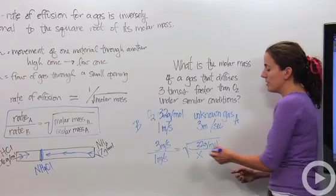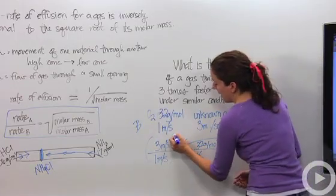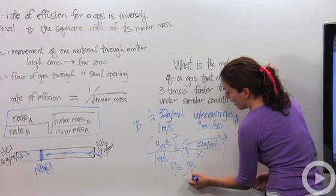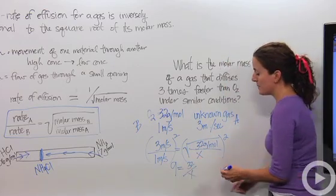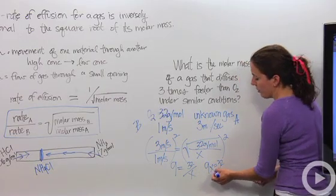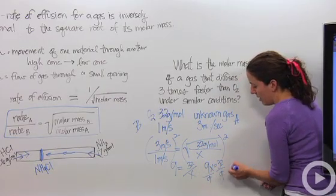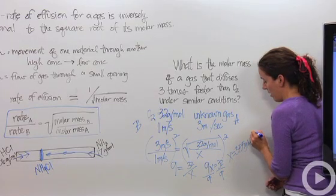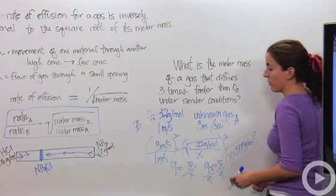So we want to solve what x is. Well, an easy way to do this is square both sides. And that's going to give me 9 equals 32 over x. So when we multiply x times 9, we get 9x equals 32. We divide both by 9. x equals 3.55 grams per mole.